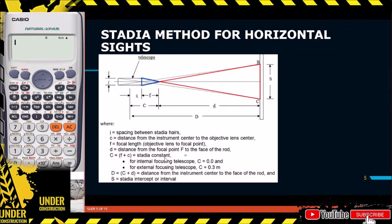As mentioned, there are two kinds of telescopes. For the internal focusing telescope, c is equal to zero, and for the external focusing telescope, c is 0.3. The difference is that the internal focusing telescope has its focus inside, so there is no value for f or c, meaning the Stadia constant C equals zero. Whereas for the external focusing telescope, the focus is outside, so there are values for both f and c, giving C equal to 0.3.